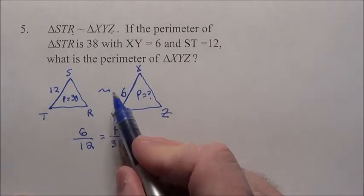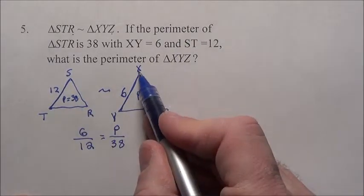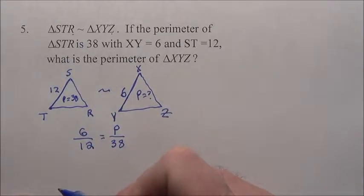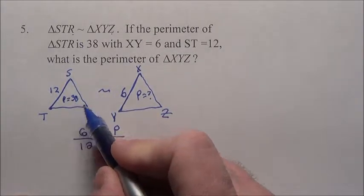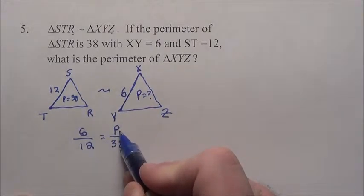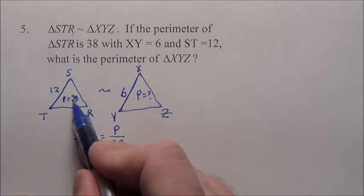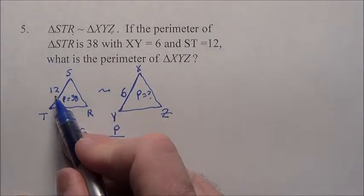I can easily see 6 to 12, that's 1 to 2, so for every 1 inch this guy has, this guy's side lengths are twice as big, so if this perimeter is 38, in my head I can see that's 19. Do you see that? Because 19 doubled is 38, 6 doubled is 12.